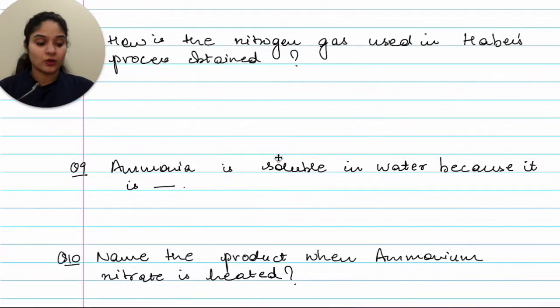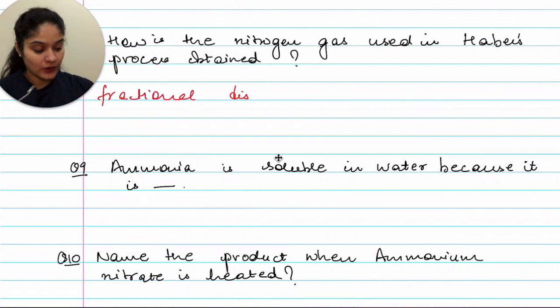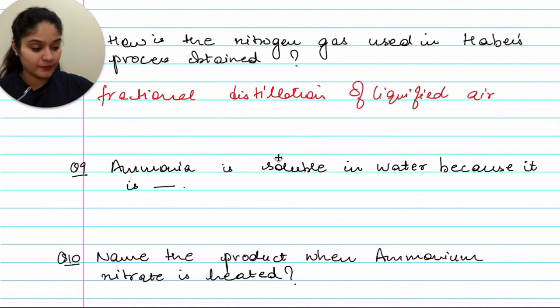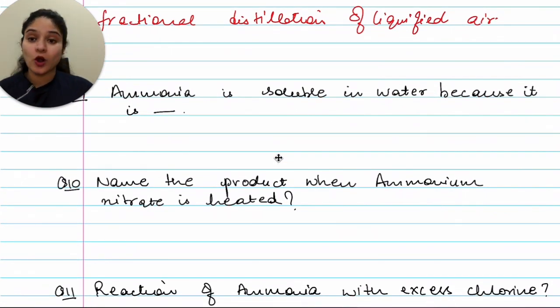Now moving on to question eight. How is the nitrogen gas used in Haber's process obtained? So it is obtained by fractional distillation of liquefied air. Moving on, ammonia is soluble in water because it is alkaline in nature.